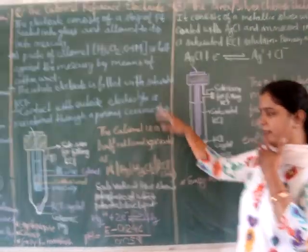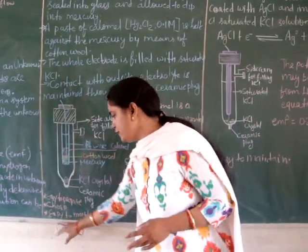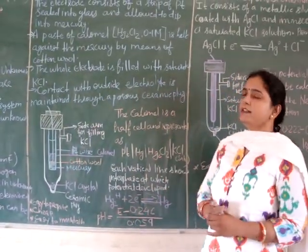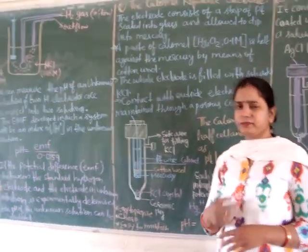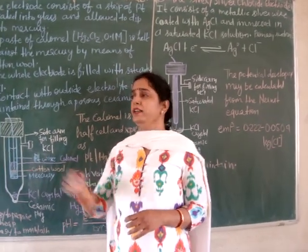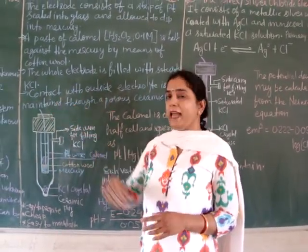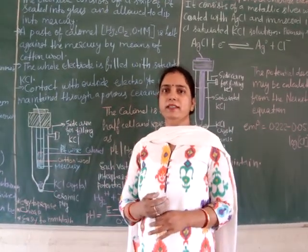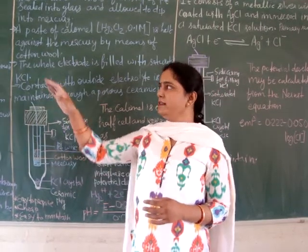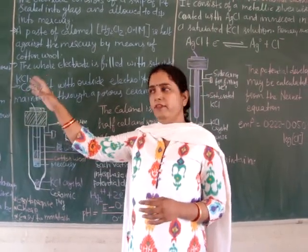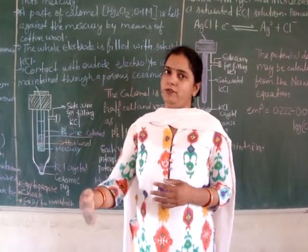The calomel reference electrode is very easy to prepare and it is very cheap and easy to maintain. That is why it is generally used as a reference electrode, whereas the hydrogen electrode is not easy to maintain because hydrogen gas must flow at constant pressure, which is very difficult to maintain. So it is rarely used, but it is used to determine the electrode potential of other reference electrodes.